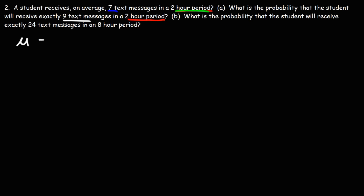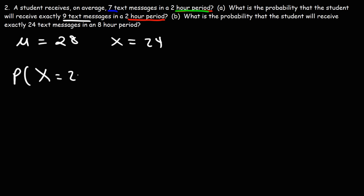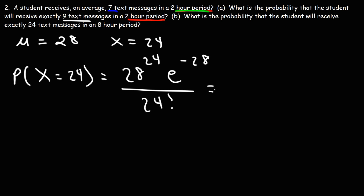So mu is 28 and x is 24. We want the probability that the student will receive exactly 24 text messages in this 8-hour period. Using the formula, P(x=24) equals 28 raised to the 24th power times e raised to the negative 28, divided by 24 factorial. The answer is 0.060095, approximately 6%, or 6.01%.